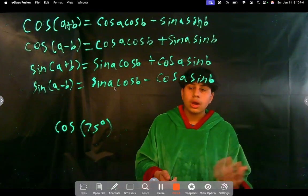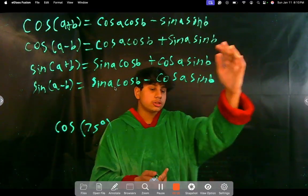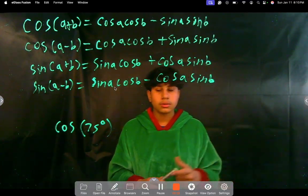Cosine of 75 degrees. From what we know, like our chart that we usually make, we can't really find that, right?